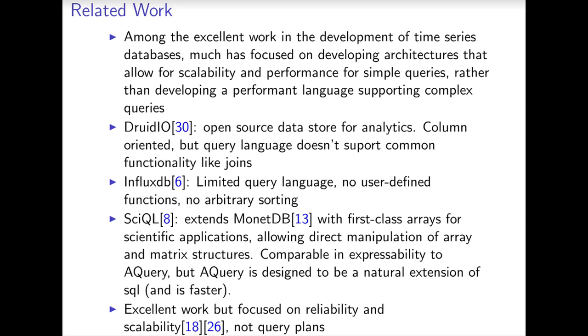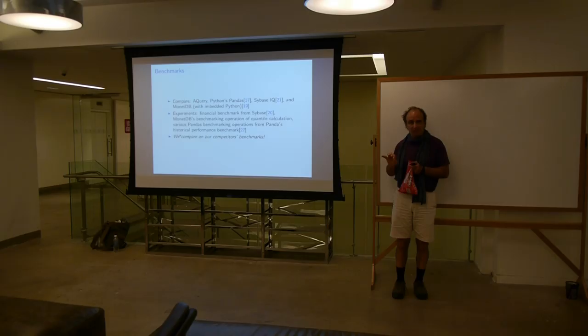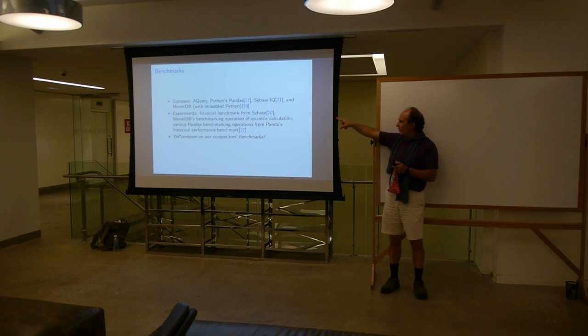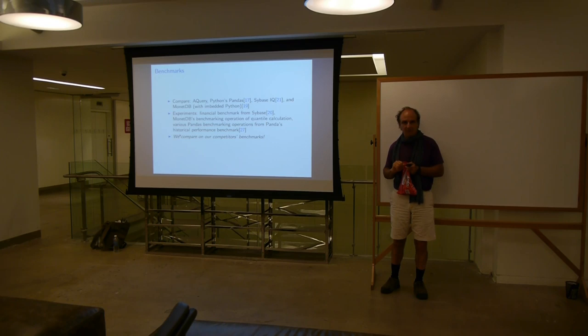Here is related work, which I'll invite you to look at on your own. We compared A query — our system — with a Python extension called Pandas, with Sybase IQ (now part of SAP), with MonetDB. Because the only commercial one here is Sybase IQ, I'm going to focus on that, and also show our comparison to Q itself. The way we've done these comparisons is we looked at the benchmarks that each of these systems used, and then we compared on their benchmark — and we beat them on their benchmarks.